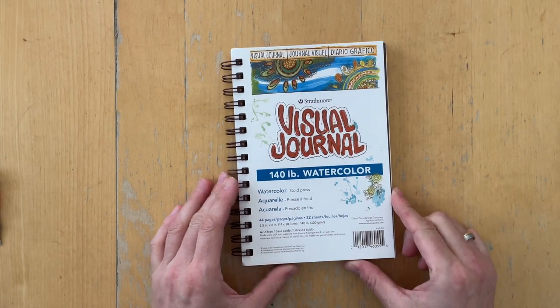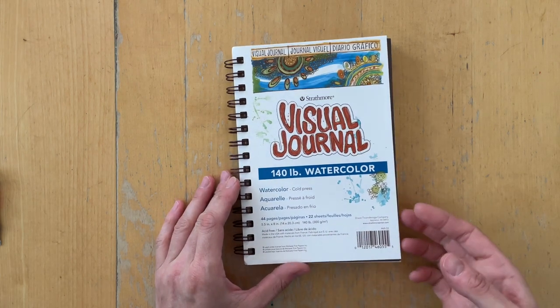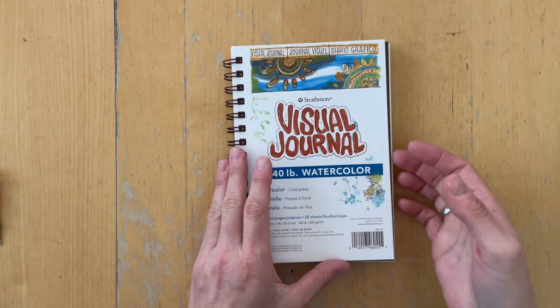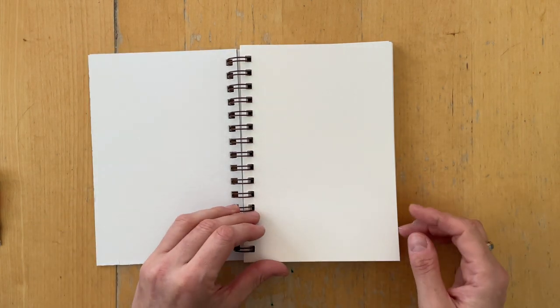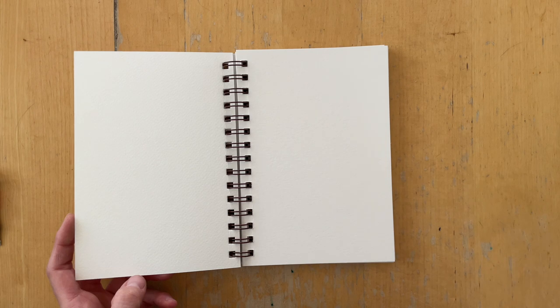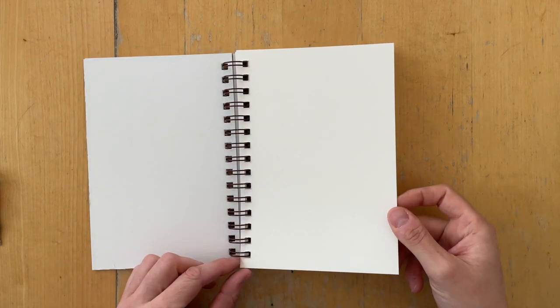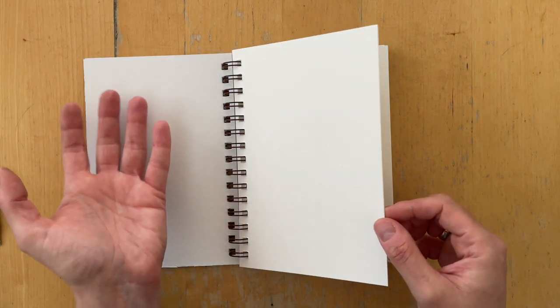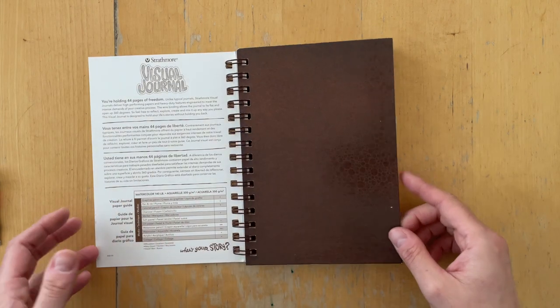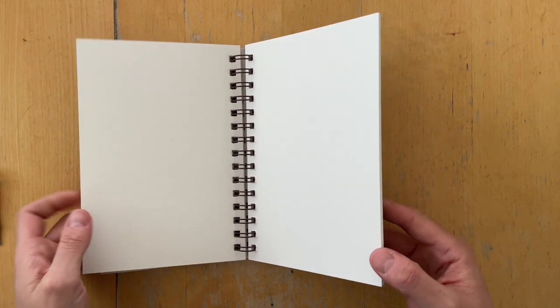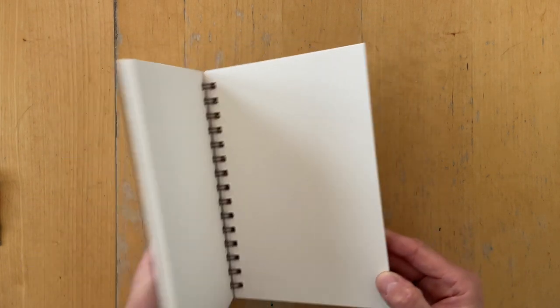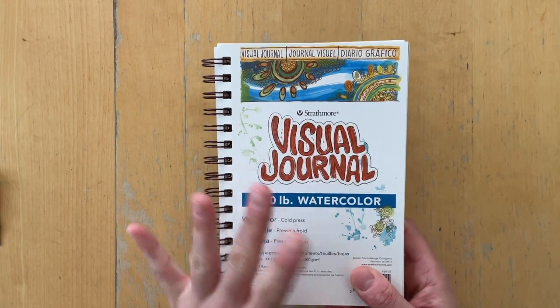On Amazon, I also purchased this visual journal. It's from Strathmore. It has 140 pound watercolor paper. I haven't started using it yet. The reason for that is that I realized later that a wire-bound journal isn't really that amazing when you scan the pages. So I don't know what I'm going to do about this. Maybe I'm just going to clip them so I can take them out, scan them, and then put them back in. Not sure yet, but I really wanted to try this. I really like the concept, the size. I'll keep you updated on how this one works out, how I like the paper inside.